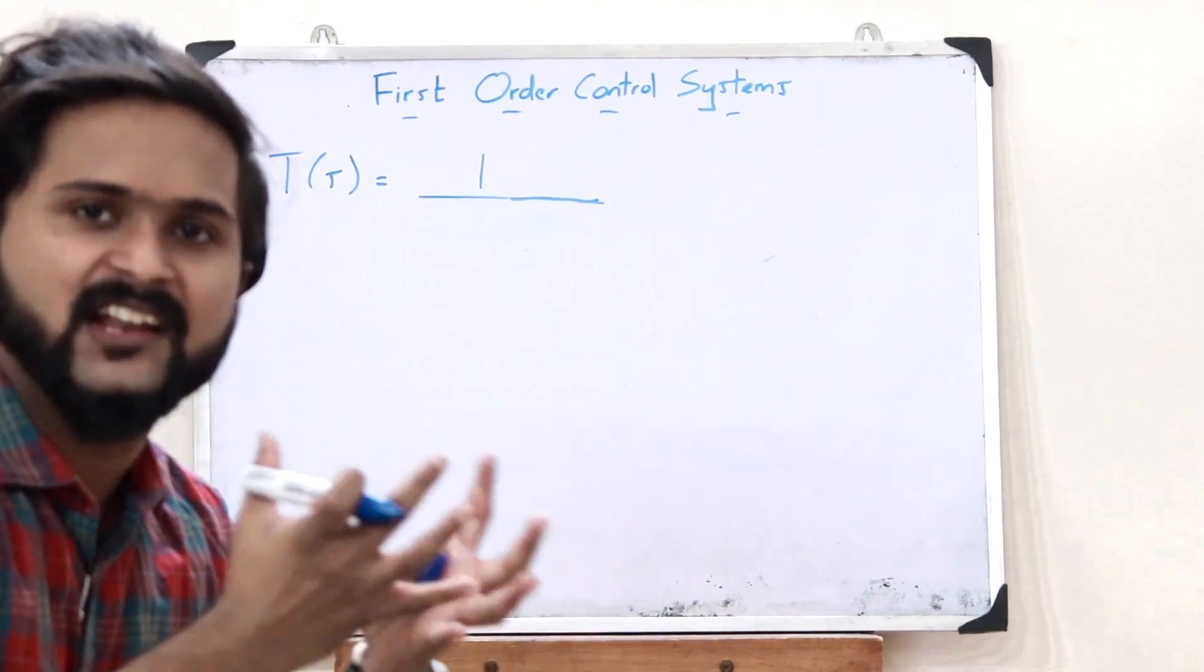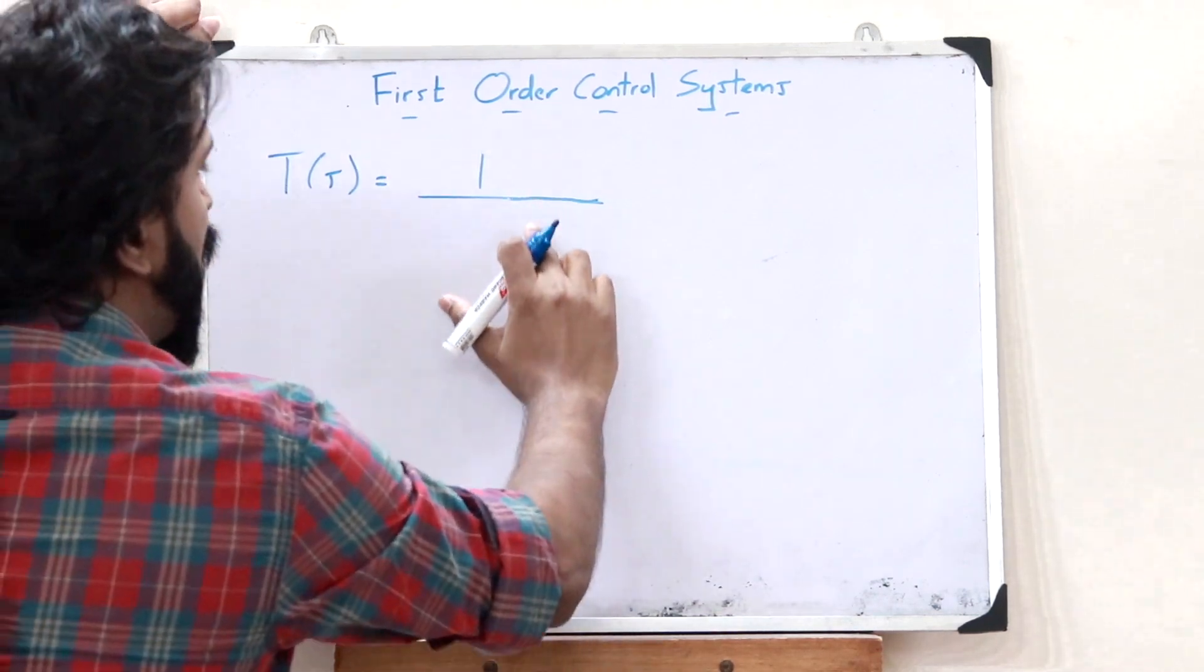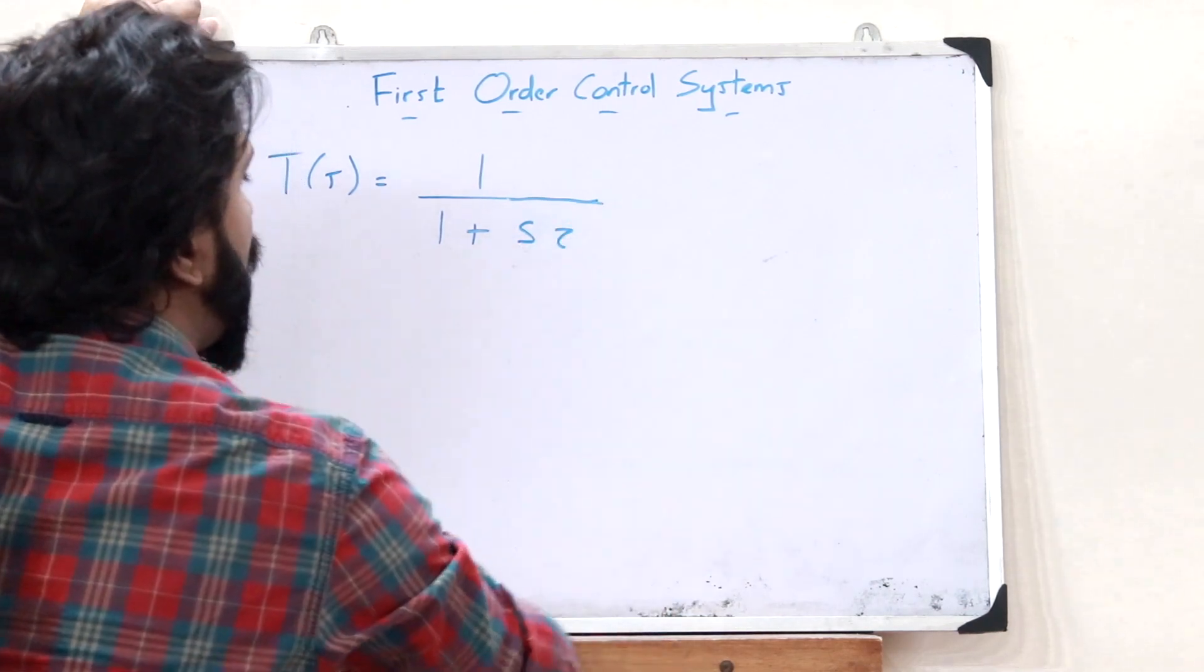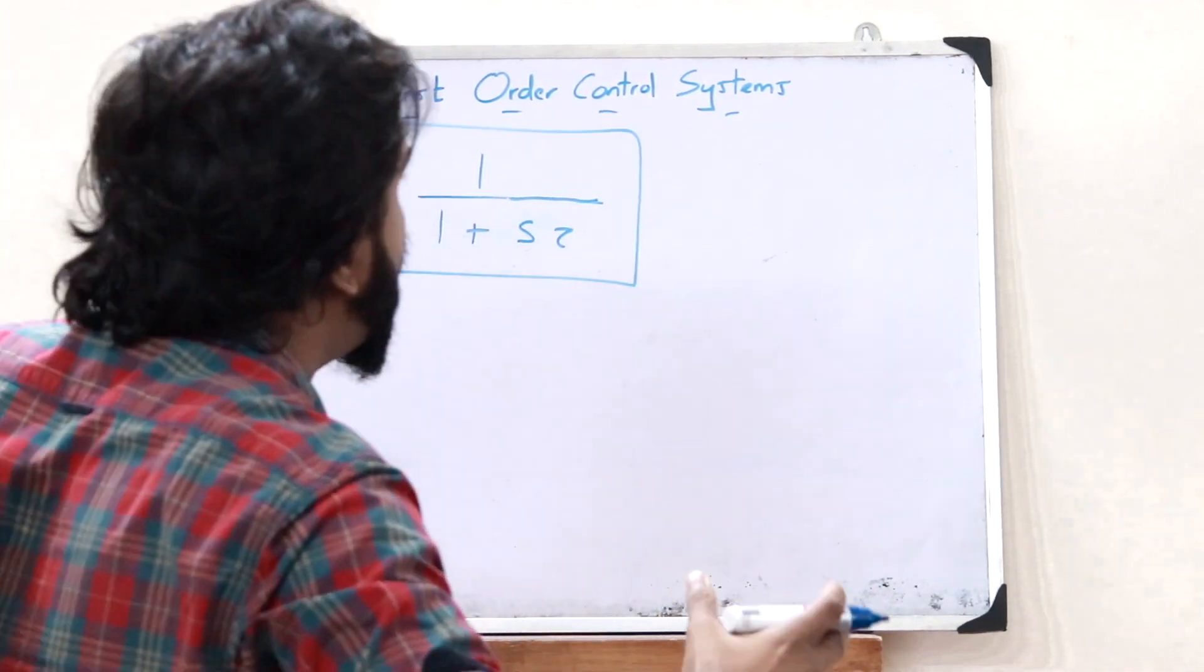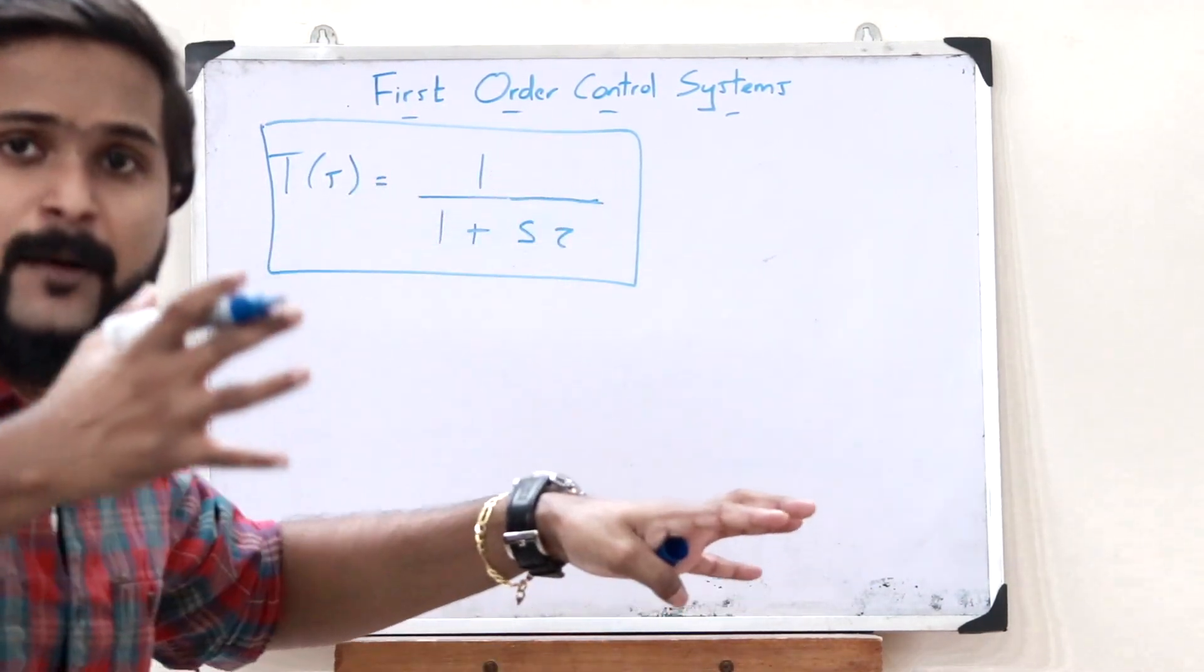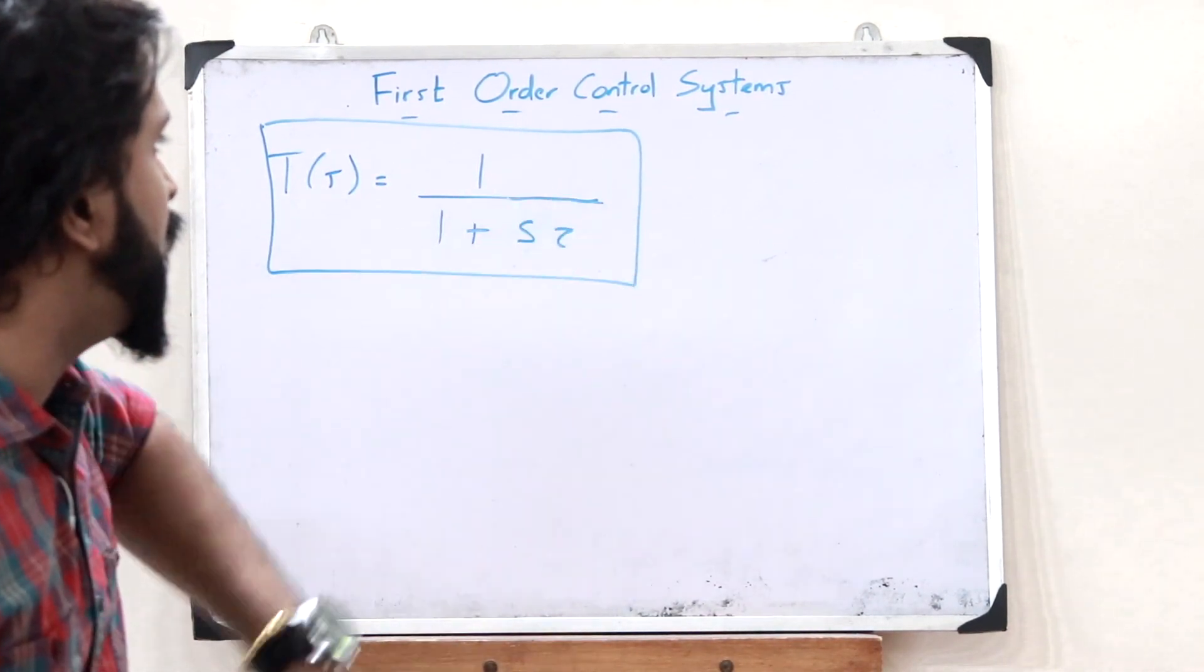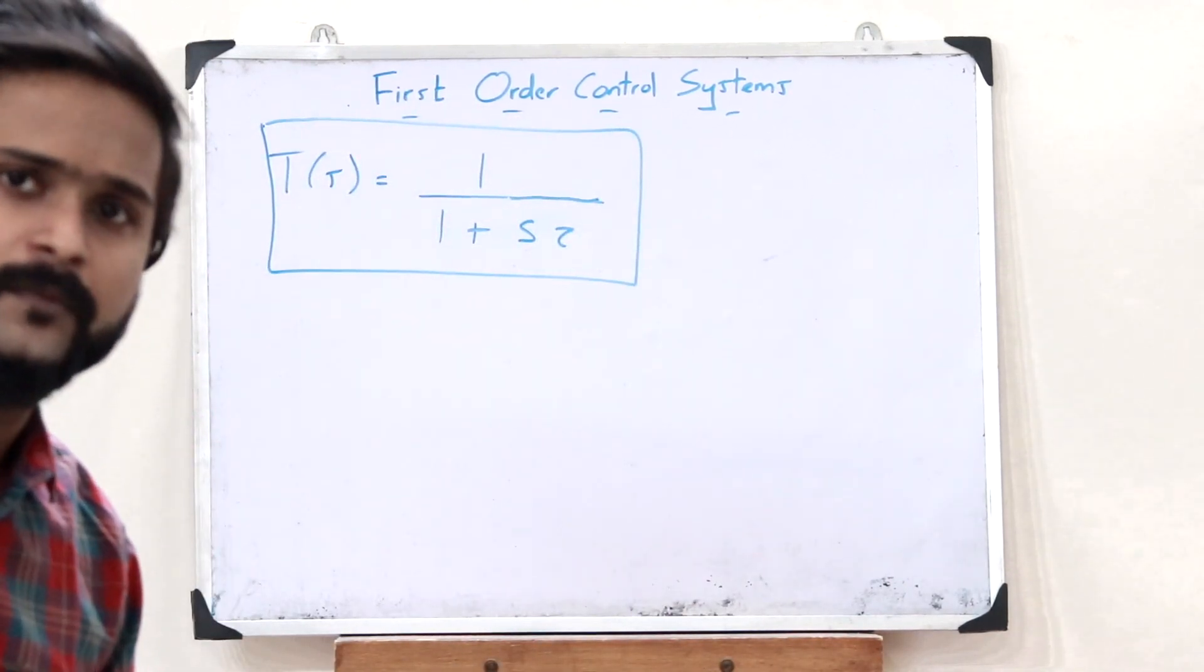Therefore, the basic general transfer function of a first-order control system is written as T of S equals 1 divided by 1 plus S tau. Here, the maximum power of S is 1. Therefore, such kind of a control system which has got a transfer function in which the maximum power of S in the denominator is 1 is simply what you refer to as a first-order control system.